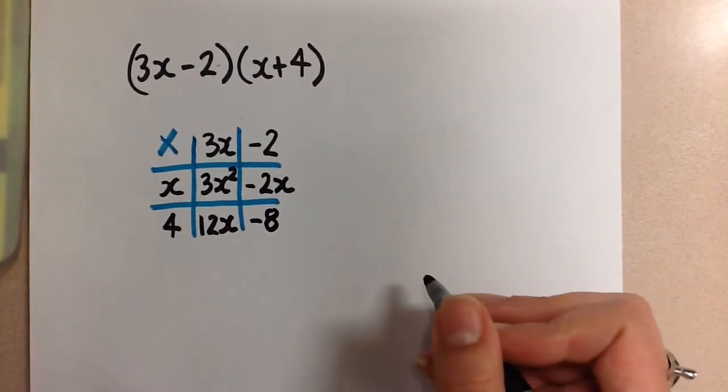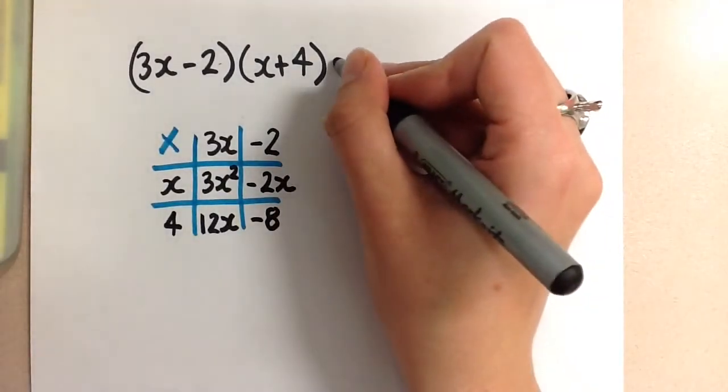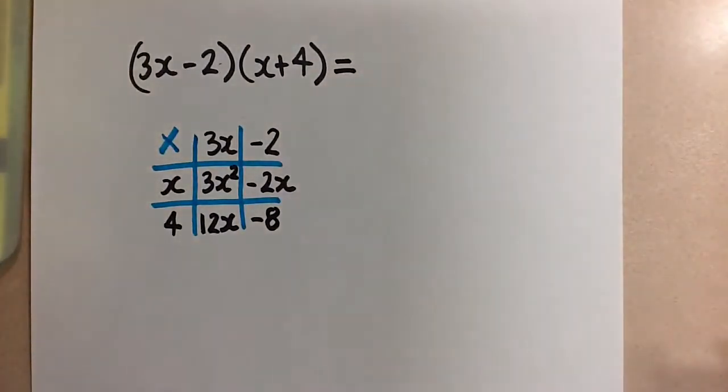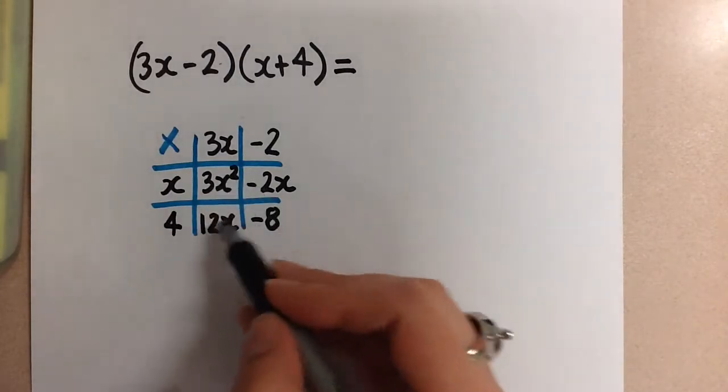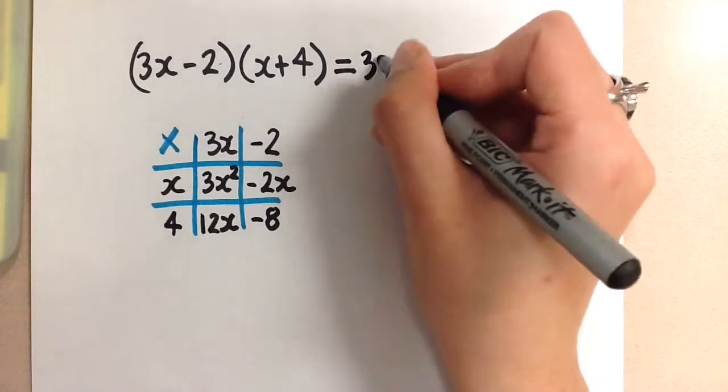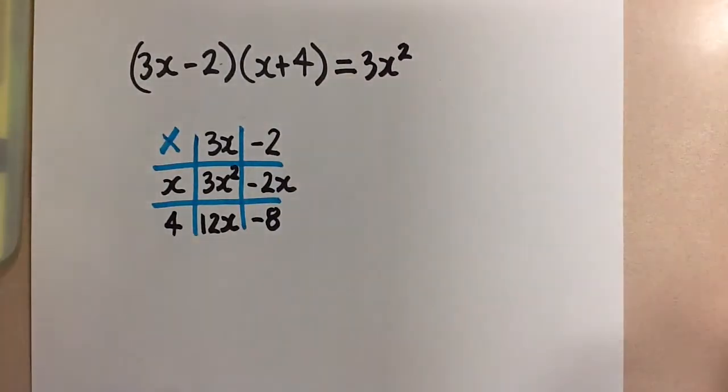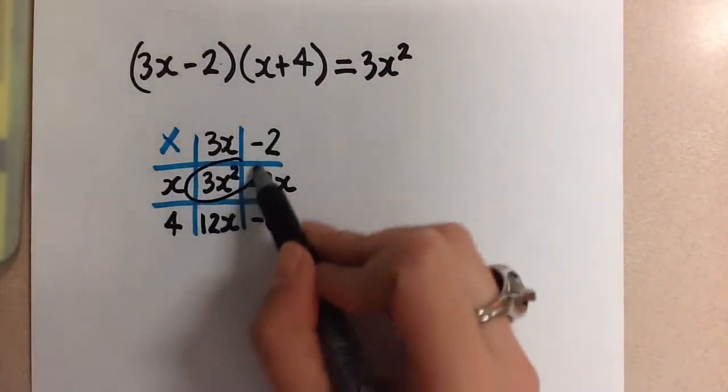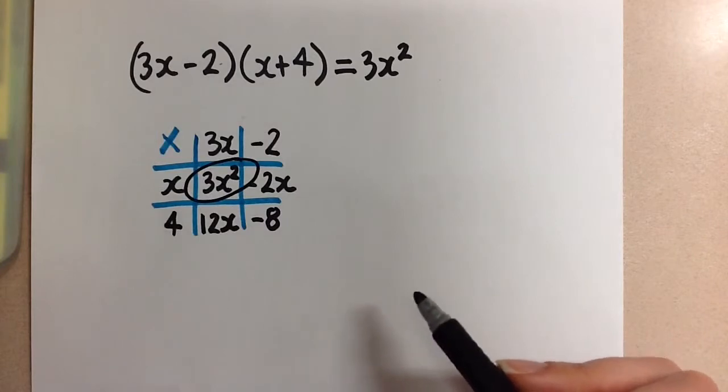So when we write out our final answer, we have to put all of these four terms together. We start with the x squared term. So we have 3x squared. That's the first one we write down here. Next, we're going to write down the x terms.